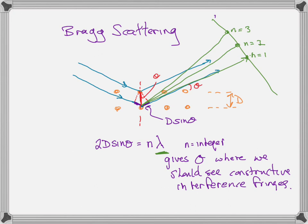We're showing Bragg scattering because the next thing we're going to show is electron diffraction and electron interference off of crystal planes. In the meantime, I want to talk about the assumption that electrons actually do have wave-like properties, which allows us to modify the model of the atom, and then show the experiment that demonstrated that electrons have wave-like properties. So that's next.